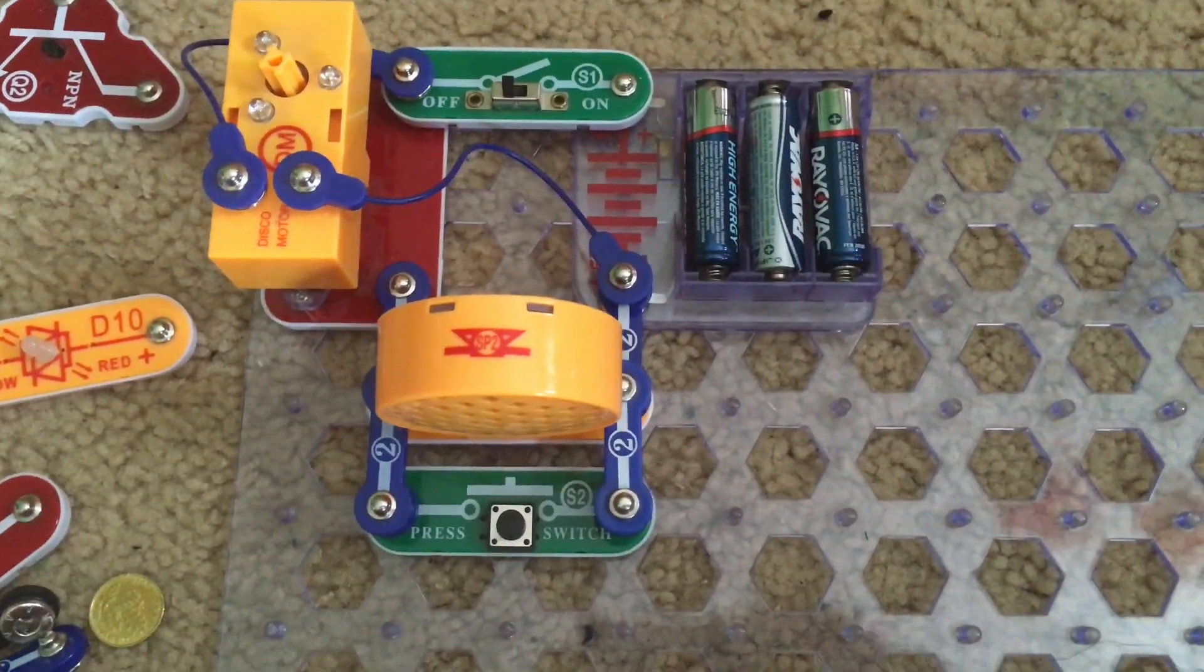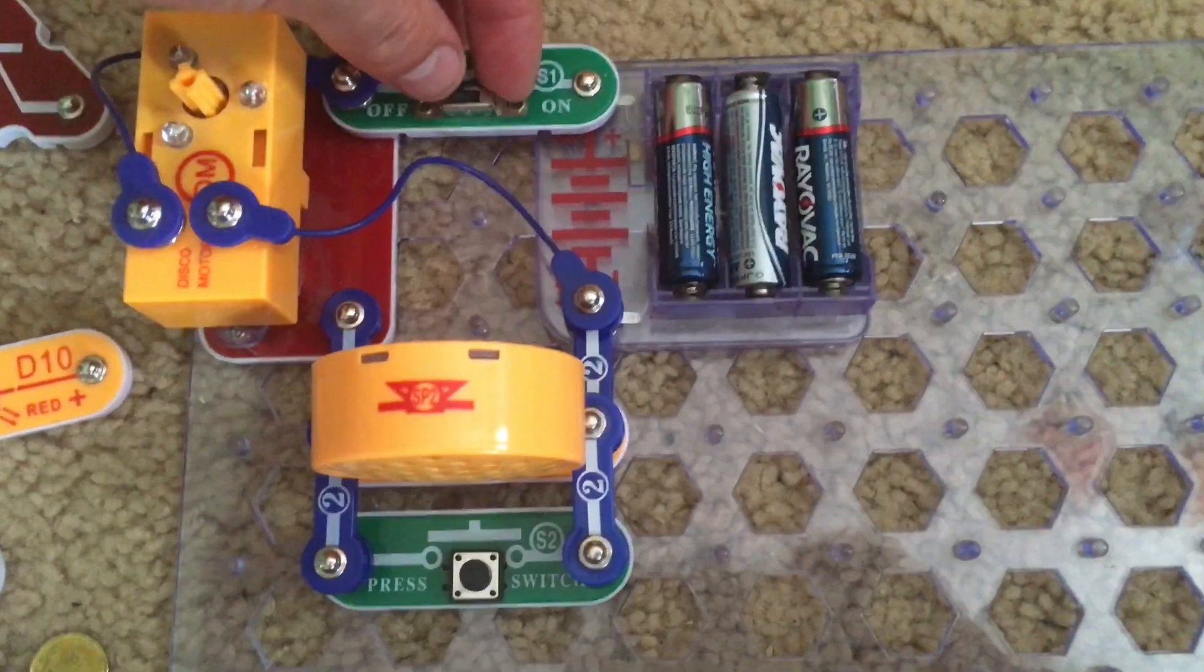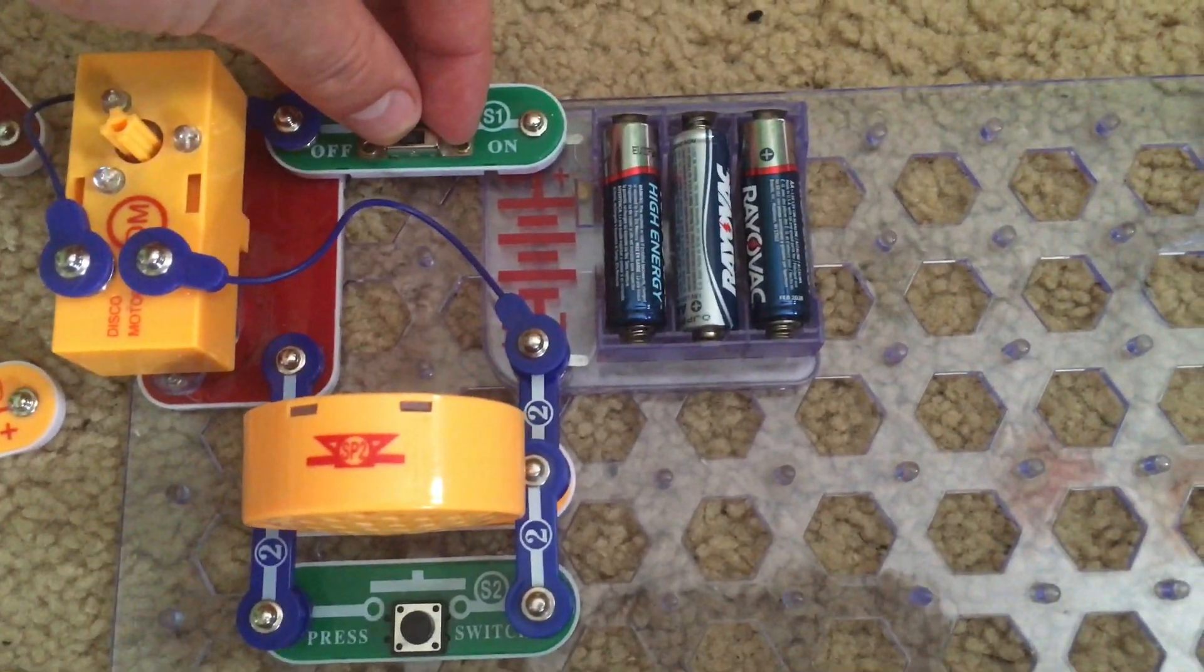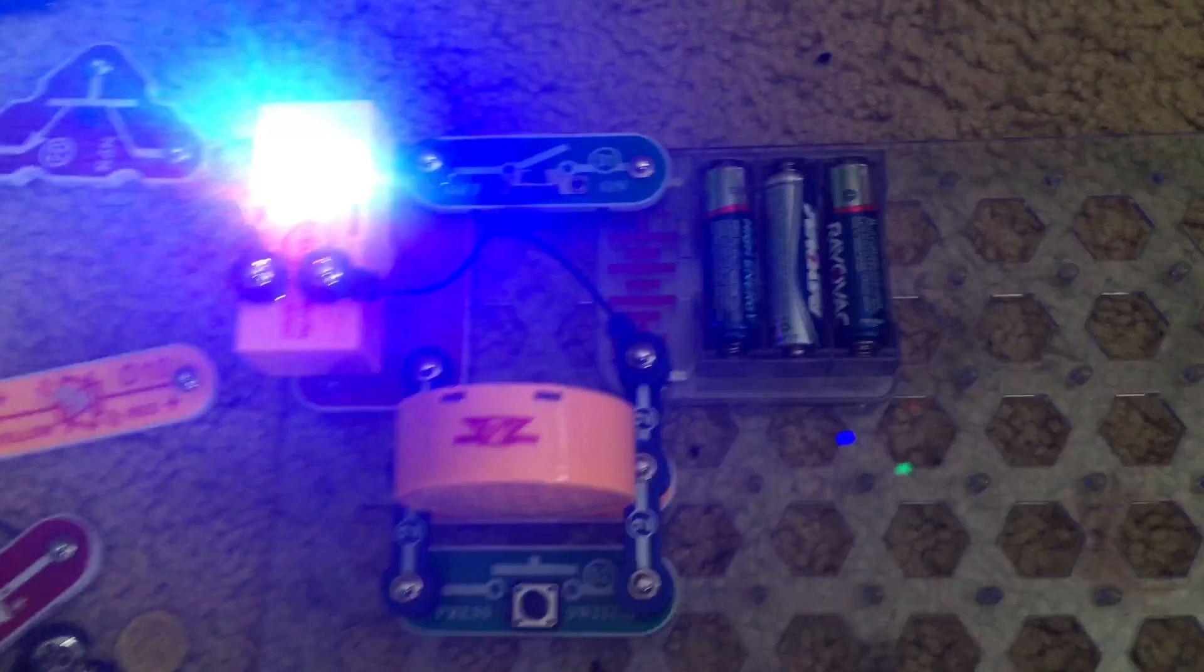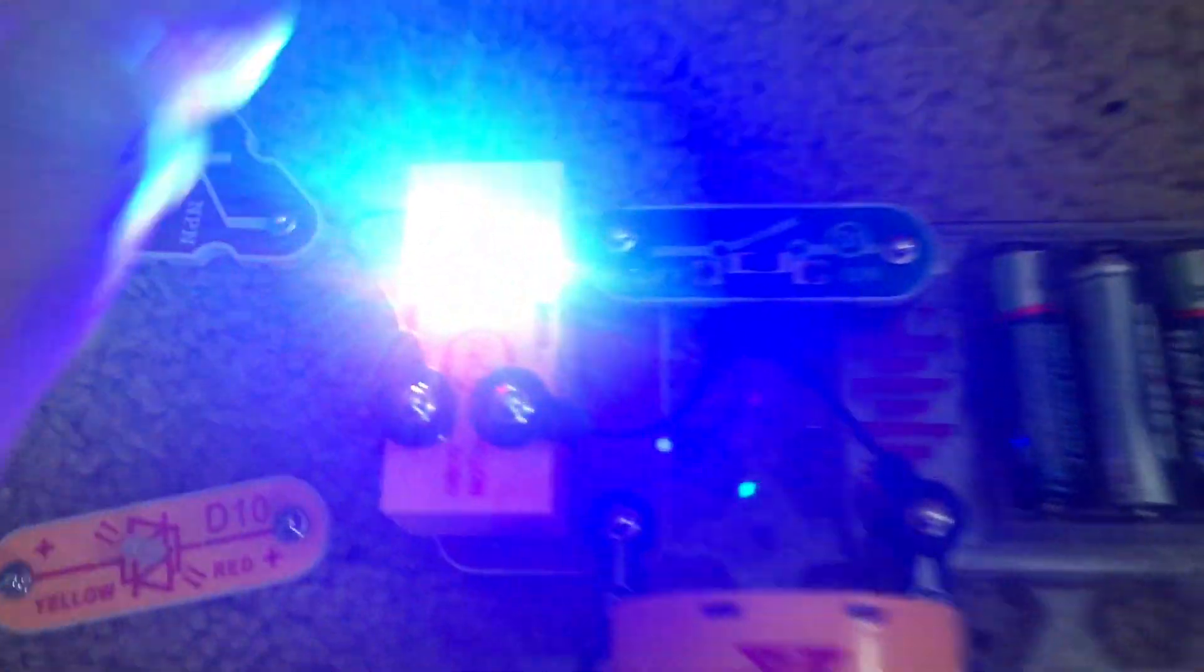Project 47 is two speed disco ball. We will turn on the slide switch and let's see what happens. The disco motor spins and although it may be hard to see because of the bright lights, it spins pretty slowly.